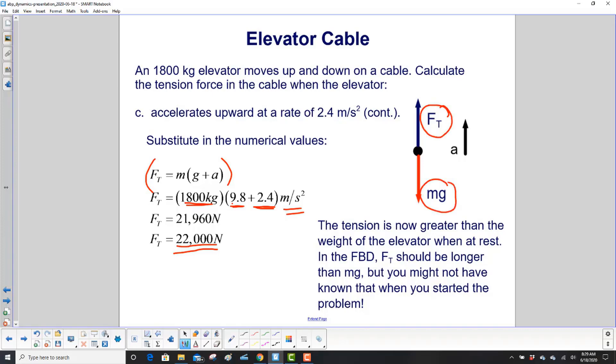If we wanted to redo this, we could draw F_T bigger and mg smaller. The critical piece on the free body diagrams is the vector direction. Unless you know ahead of time that one force is very much smaller than the other, then you can go ahead and draw the arrows that way. But in this case we didn't know until we solved the problem.